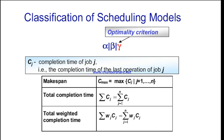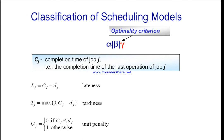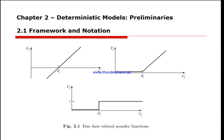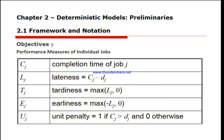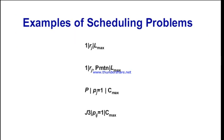Now gamma is the objective. We have makespan C_max — the completion time of the last job in the system. We have total completion time, total weighted completion time. We have lateness — if C_j is greater than d_j. We have maximum lateness, total tardiness, total weighted tardiness, total number of late jobs, and total weighted number of late jobs. These all serve as the gamma value in our classification.